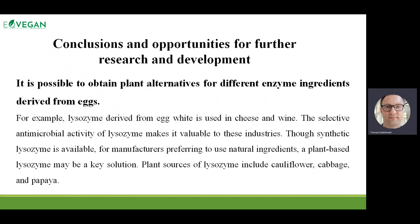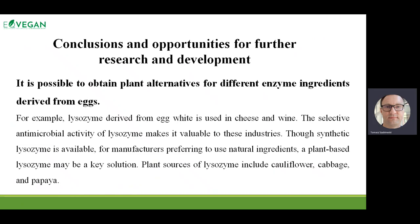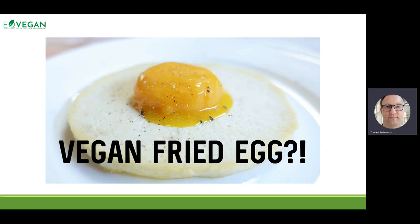This is one of the examples of how we can replace some animal products and animal ingredients in normal life. We use lysozyme which is isolated from egg white, but we can find lysozyme also in cauliflower, cabbage, or papaya. So it's quite easy to isolate this enzyme from these plants and then use it as our natural preservative.